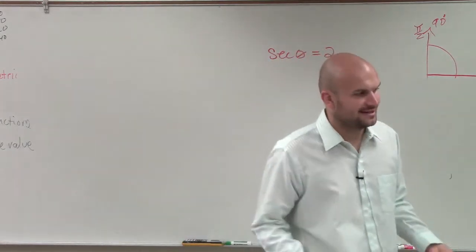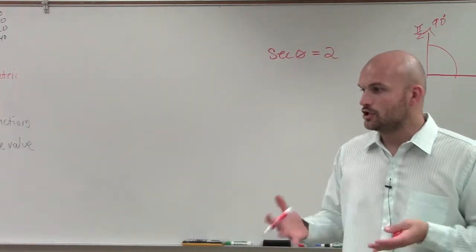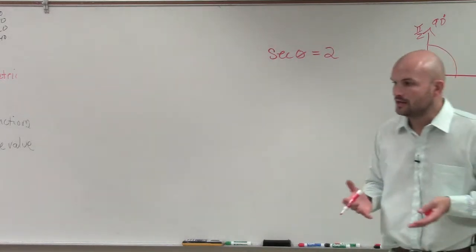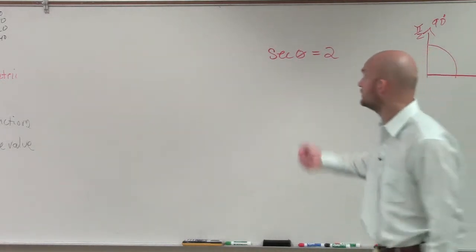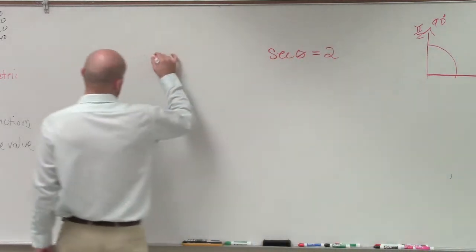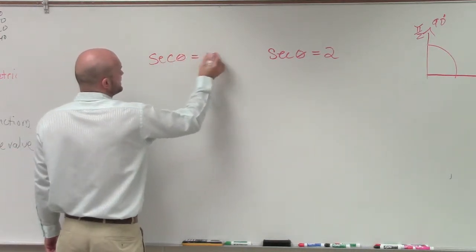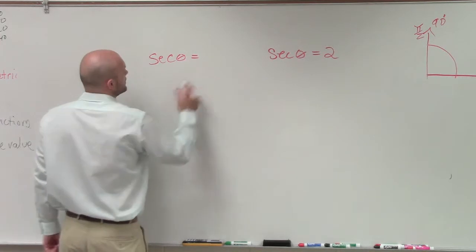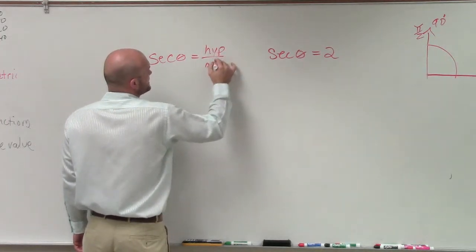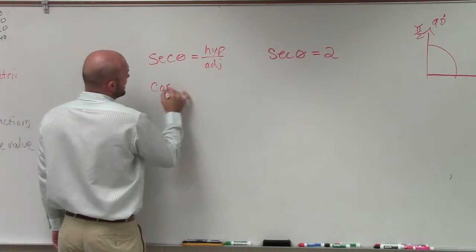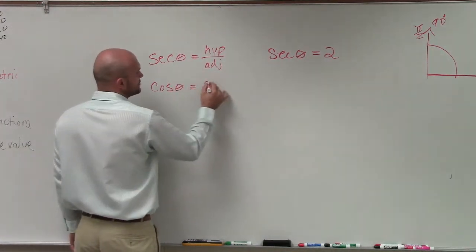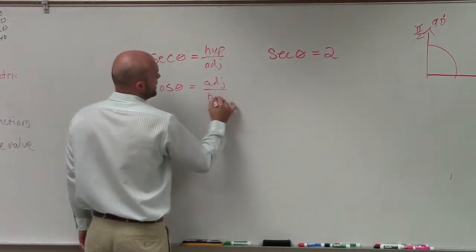Now, when given secant, ladies and gentlemen, the best thing we want to do is go back and refer to our reciprocal functions. Remember, if we said the secant of theta, that's equal to the hypotenuse over adjacent. And the cosine, which is the reciprocal of that, is equal to the adjacent over the hypotenuse.